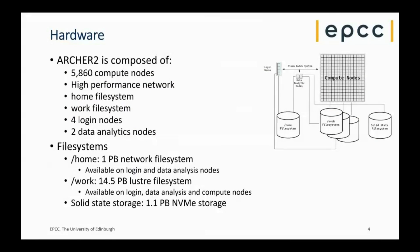ARCHER2 has nearly 6,000 compute nodes with high performance file systems and, crucially, a high-performance network. What makes this a high-performance computer is not just the compute nodes — it's the compute nodes alongside a very fast, low-latency high-speed network connecting those nodes together, with data storage attached to that high-speed network.